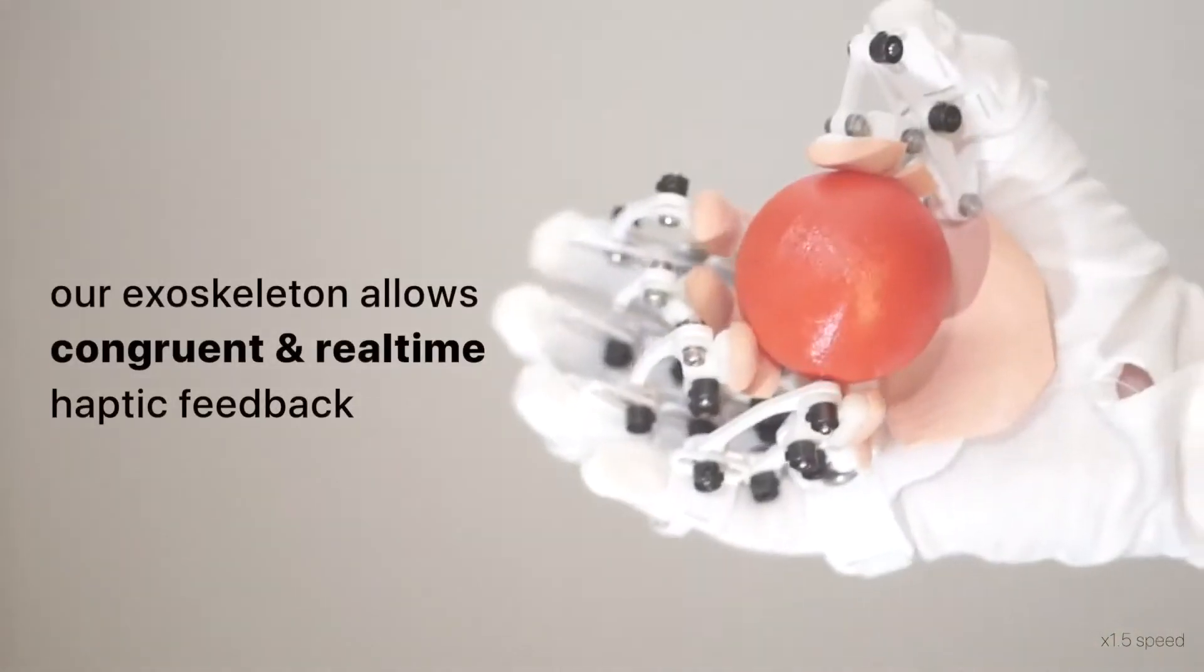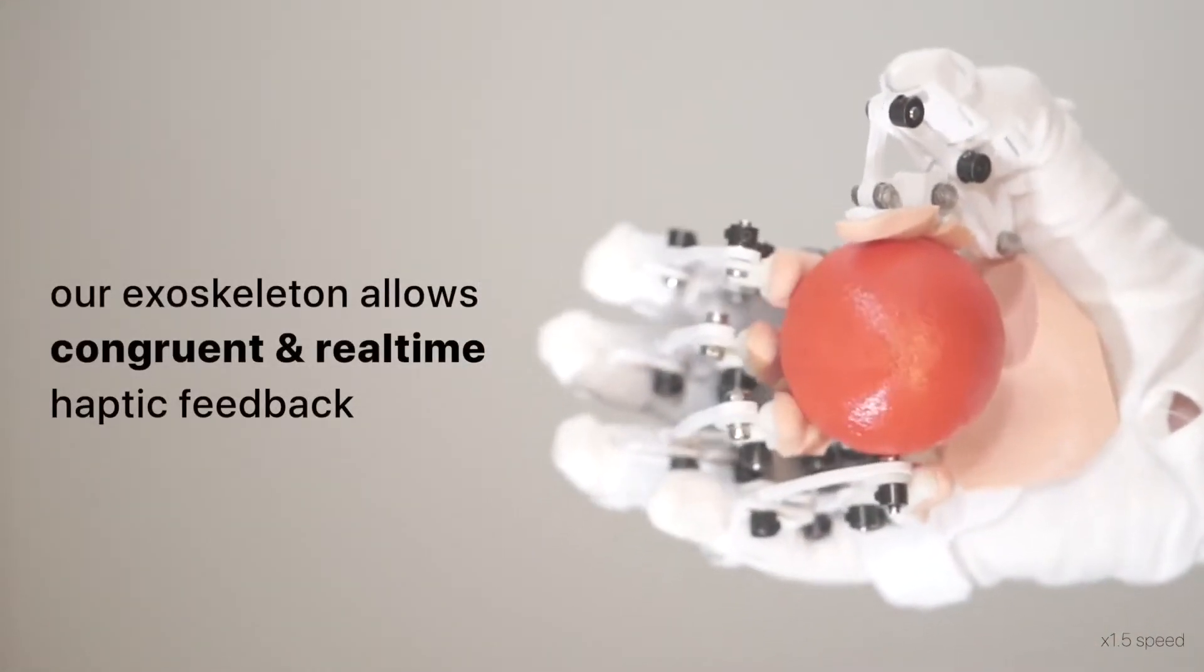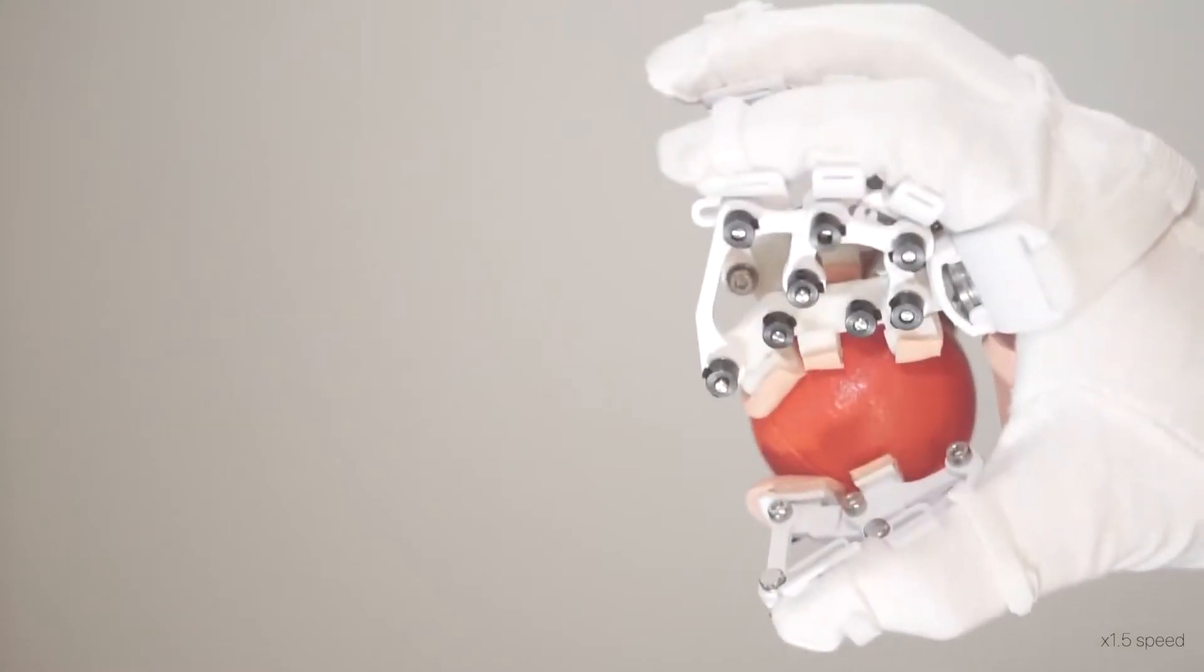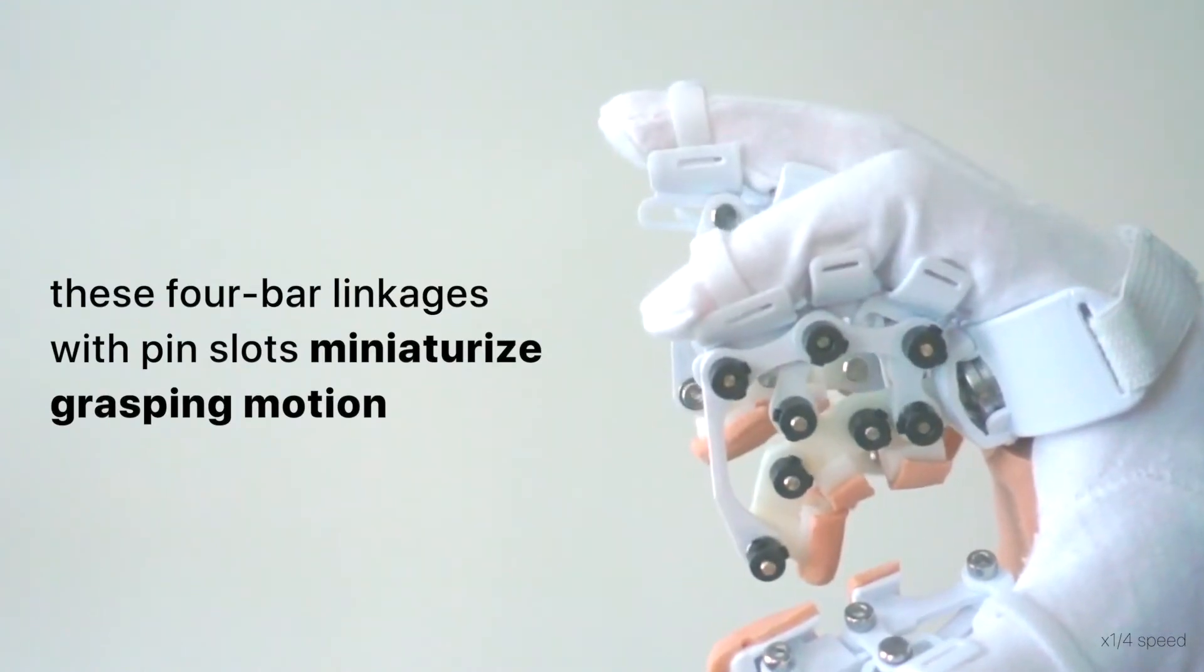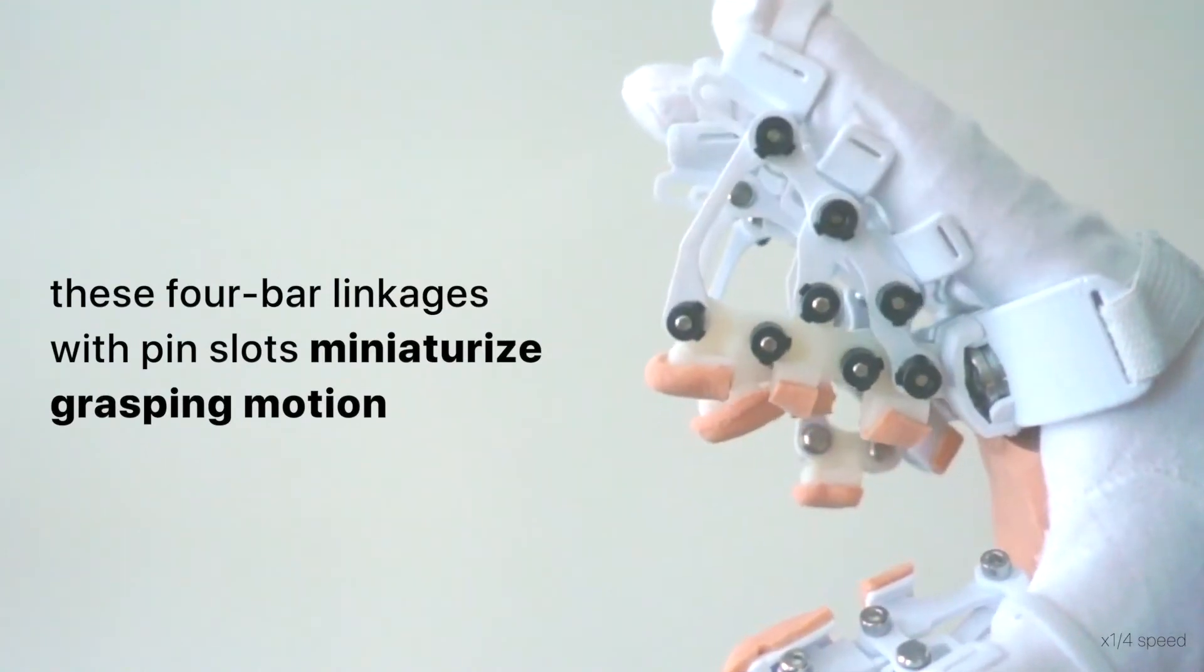Our exoskeleton allows congruent and real-time haptic feedback. It consists of a glove, link mechanism, and smaller rubber fingers. These four-bar linkages with pin slots miniaturize grasping motion.